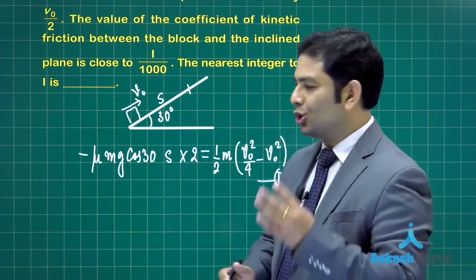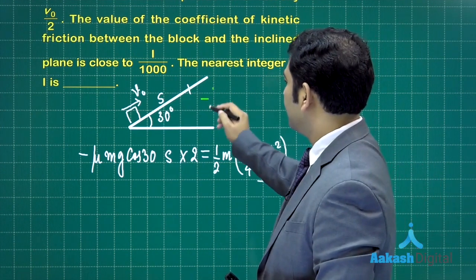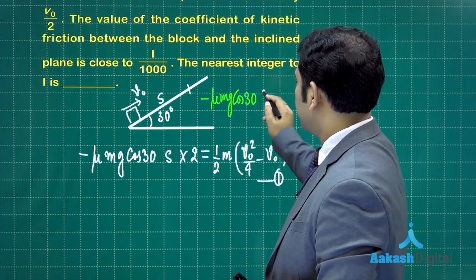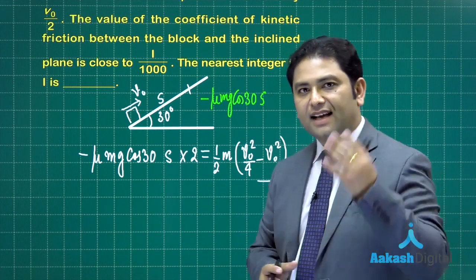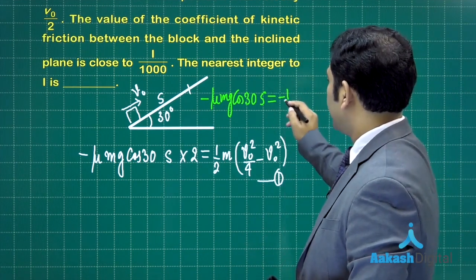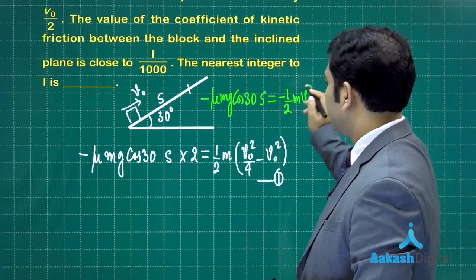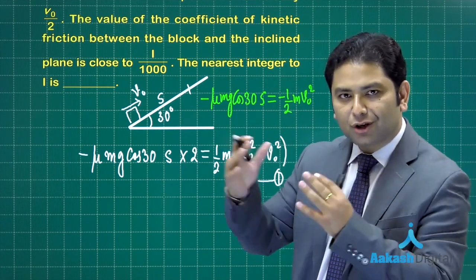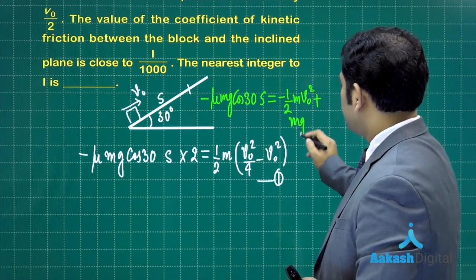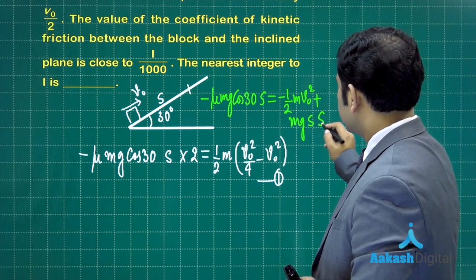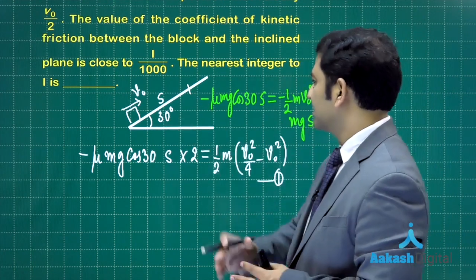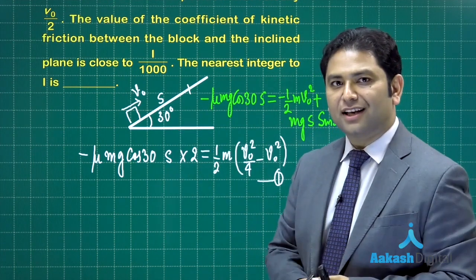Now consider just the ascent. Work done by friction is minus mu m g cos 30 times s during the ascent. That is change in kinetic energy, which is minus half m v0 square. But there's also a change in potential energy, which is plus m g s sine 30, because the height rises by s sine 30.